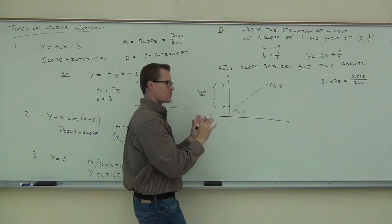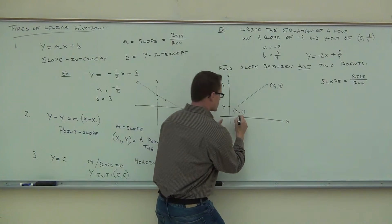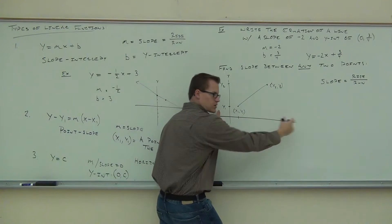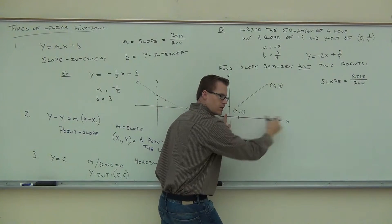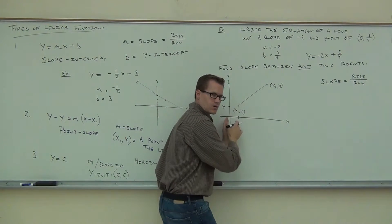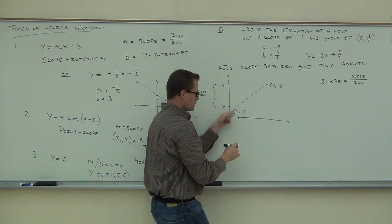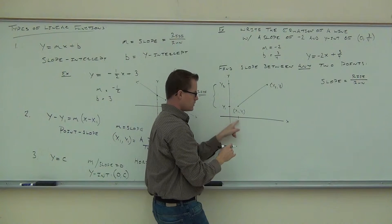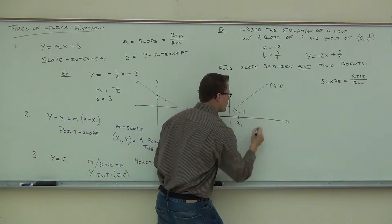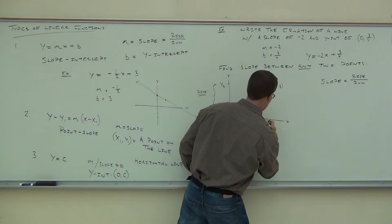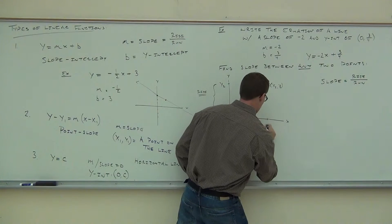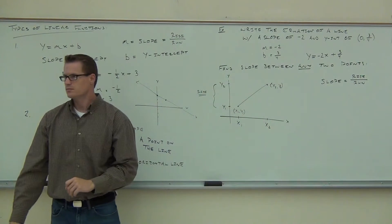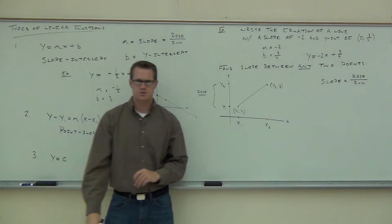We've done the hard part. Since this direction is our rise, this direction to the right has to be our run. What's this horizontal distance over? That's got to be x2. So far so good — the notation feels right.